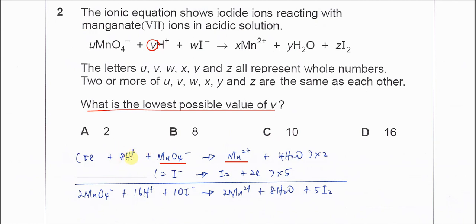Now all the elements are balanced. We need to balance the charge. We need to make sure both sides are positive two, so we need to add five electrons to let the left hand side also be positive two.